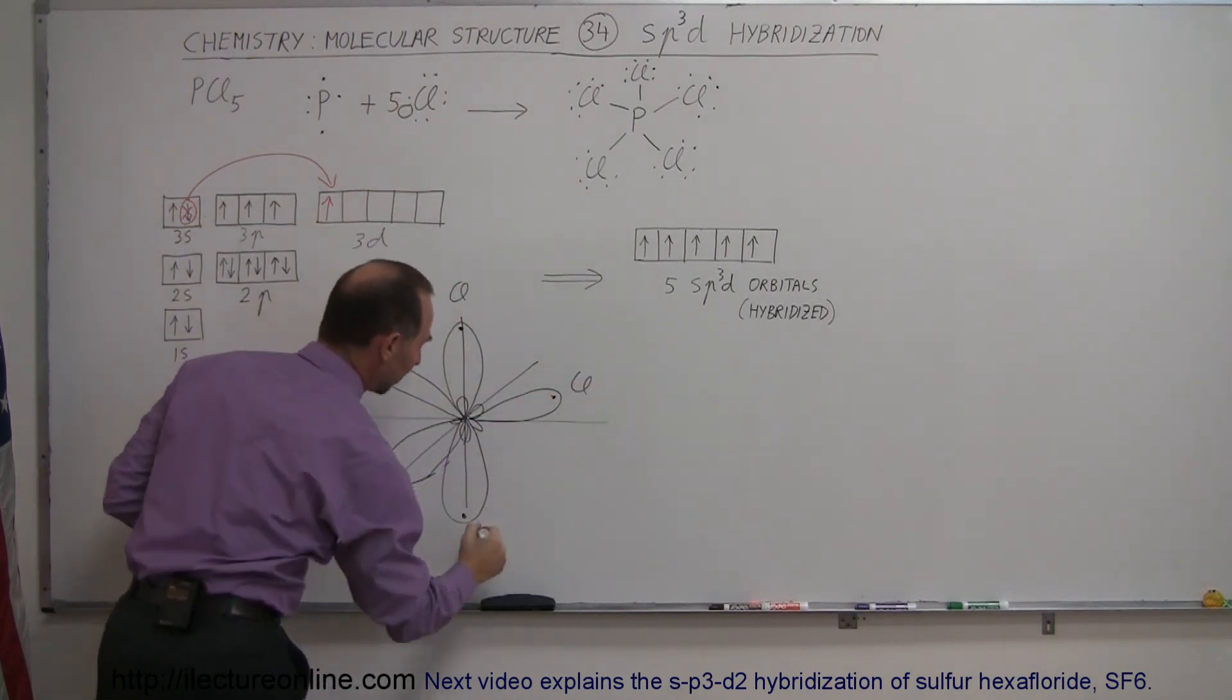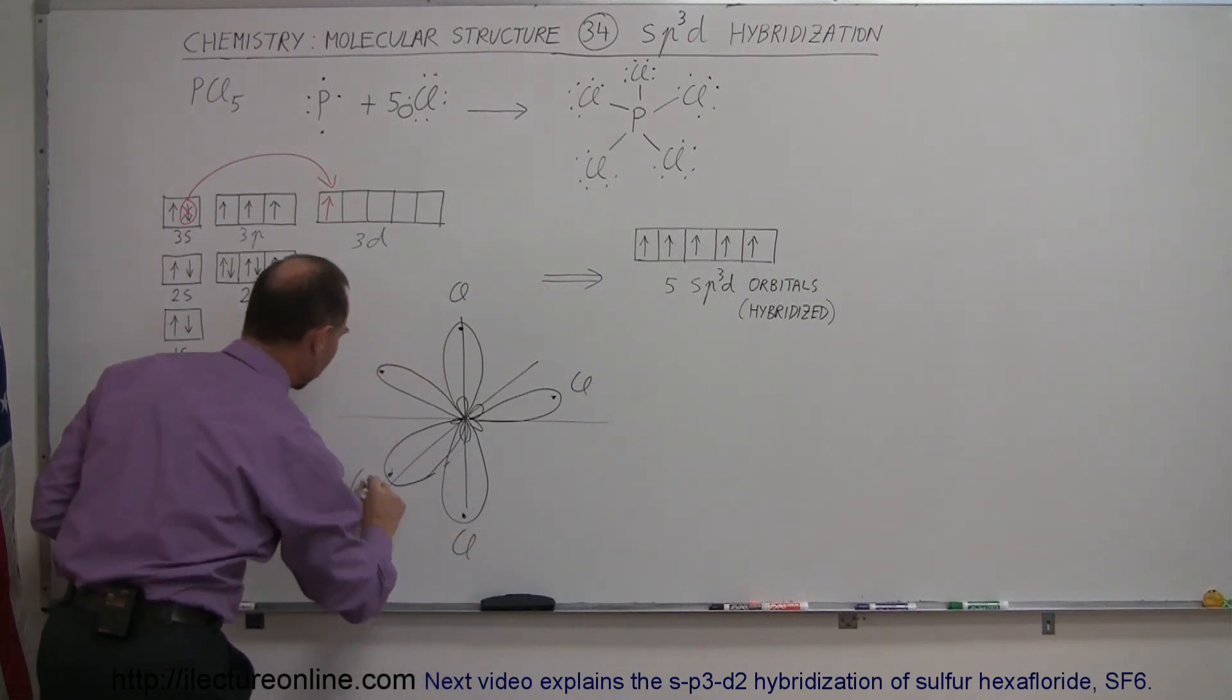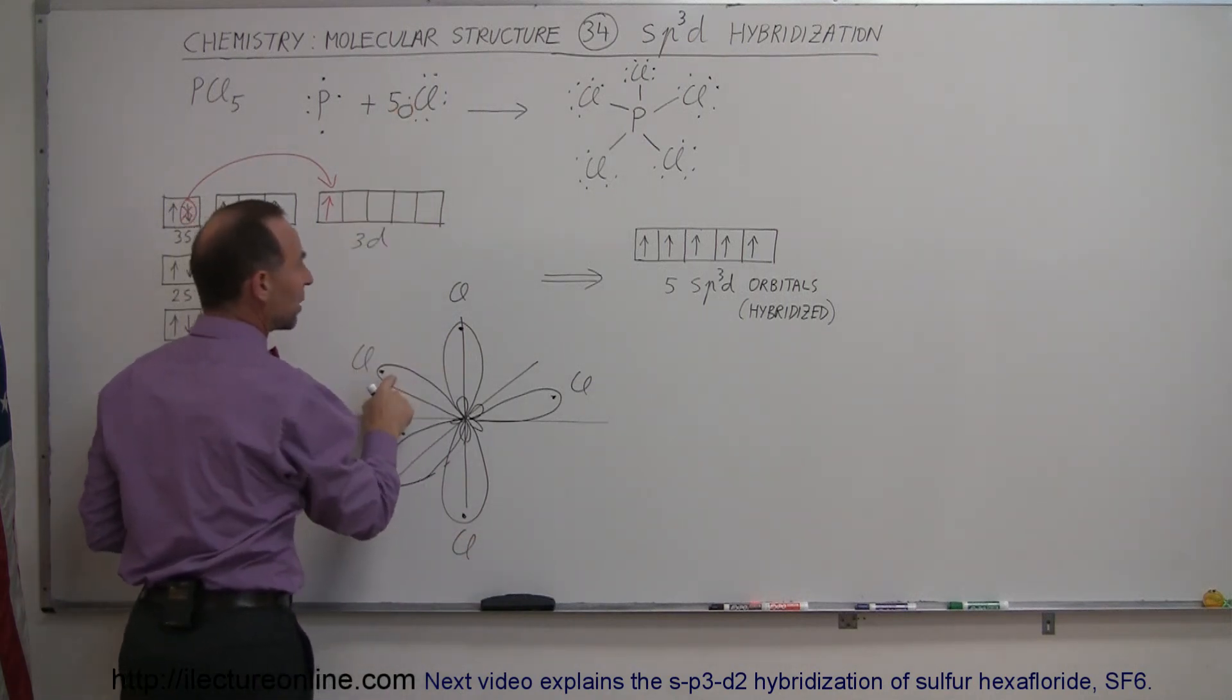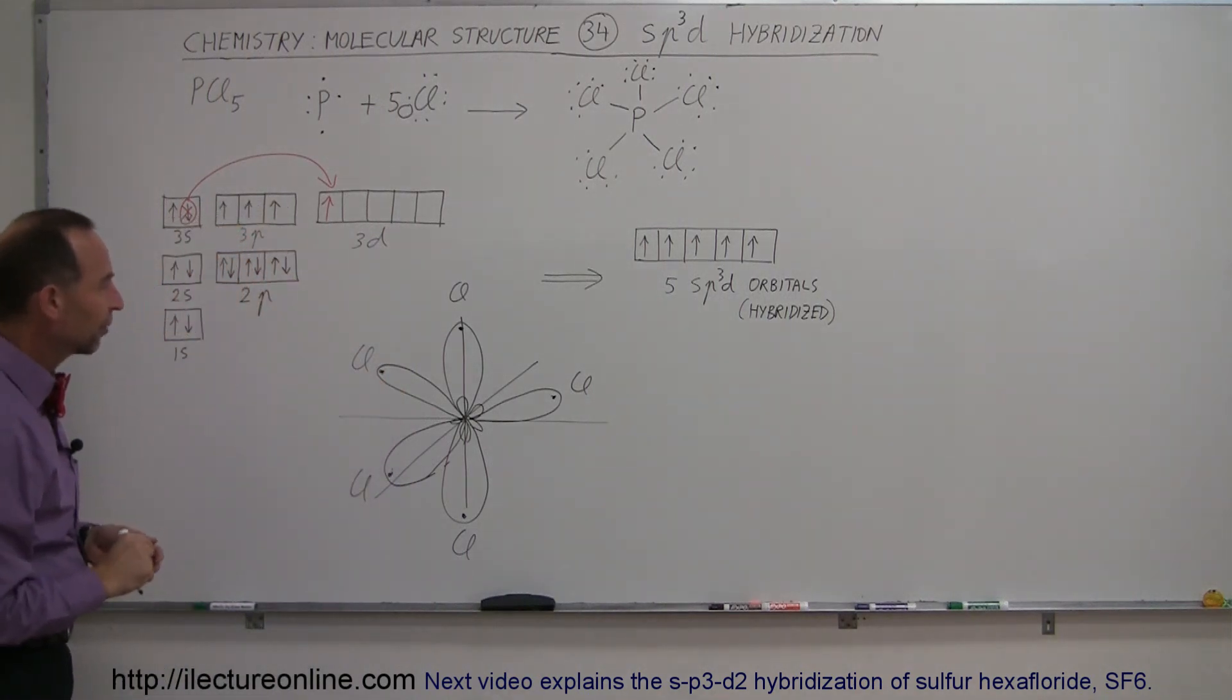So yes, they will easily then bond to the ends of these, sharing their one electron with the lobe here, with the orbital, the hybridized orbital from phosphorus. And that's how they form bonds.